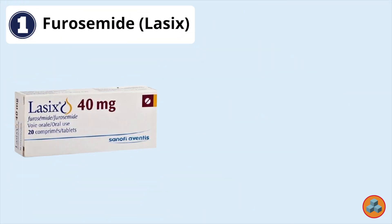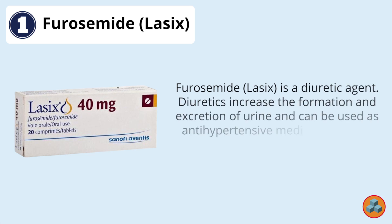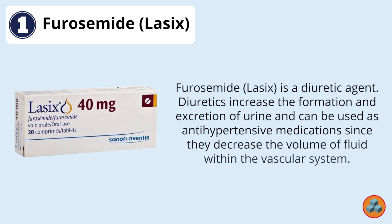Option 1: Furosemide, Lasix. Furosemide Lasix is a diuretic agent. Diuretics increase the formation and excretion of urine and can be used as antihypertensive medications since they decrease the volume of fluid within the vascular system. Orthostatic hypotension may occur as a side effect due to the fluid depletion produced by these medications.